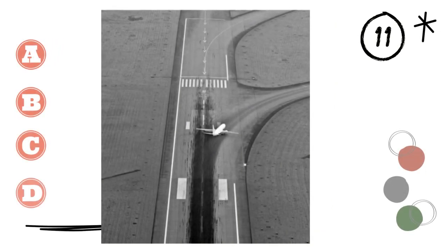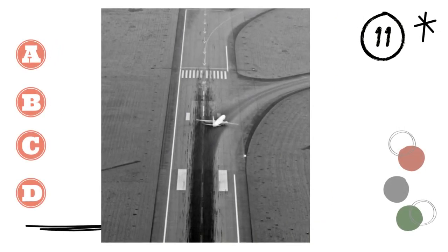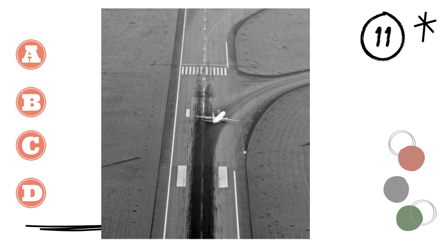11. A. The plane is on the runway. B. The plane is on the railway. C. The plane is on the highway. D. The plane is on the gateway.